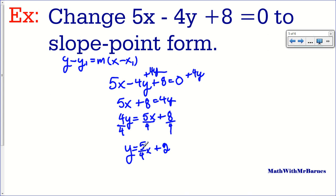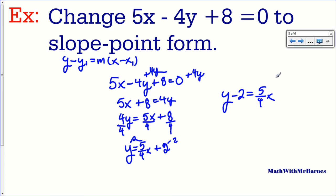Now all I have to do to get this to slope-point form is take this 2 across to the other side — so subtract 2 — and I get Y minus 2 is equal to 5 over 4 times X. And there it is. Although it doesn't look like a typical slope-point form, it is in slope-point form. It just happens that this X-coordinate is actually 0, so my point would be (0, 2). The point just happens to be the Y-intercept.